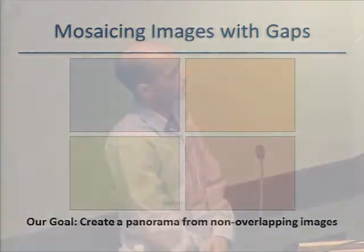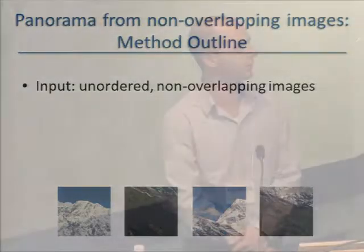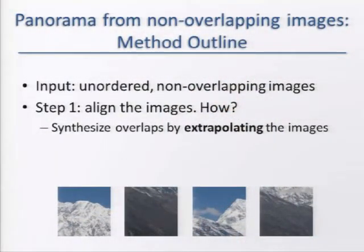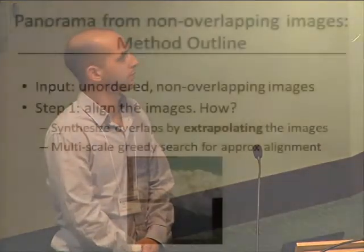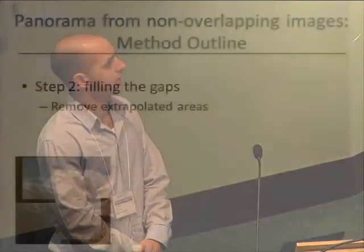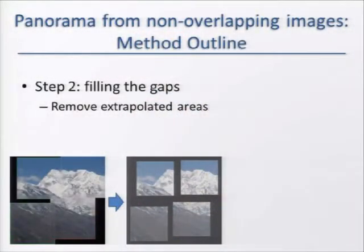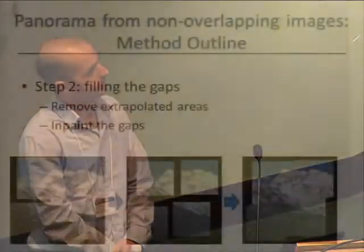The input in our case is an unordered set of non-overlapping images. The first thing we need to do is align these images, but since they do not overlap, they don't have any shared features. What we propose is to extrapolate the images, and by that, make them overlap — or hope to make them overlap. Then we perform a multi-scale greedy search for the approximate alignment. Once we have alignment, we remove the extrapolated areas because we don't want them in the final panoramic image. We then have gaps in the image, and we use inpainting to fill those gaps to get the final panoramic image.